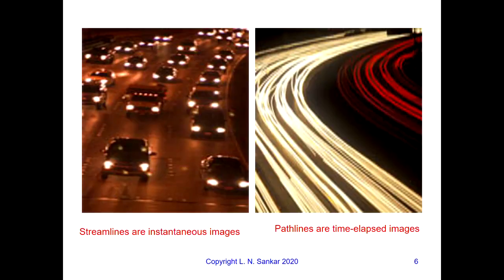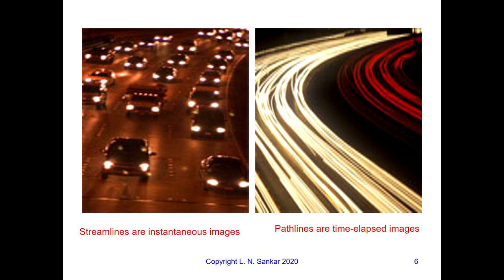If you take an instantaneous picture, you're going to get a streamline — like cars in various lanes. If you draw a line through cars that are lined up, you get a streamline, and the tangent to that streamline is simply the lane — the velocity vector of the car. On the other hand, if you see a time-lapse image, you'll see the pathlines. They may even crisscross each other, as someone might move from the rightmost lane to the leftmost lane and back.